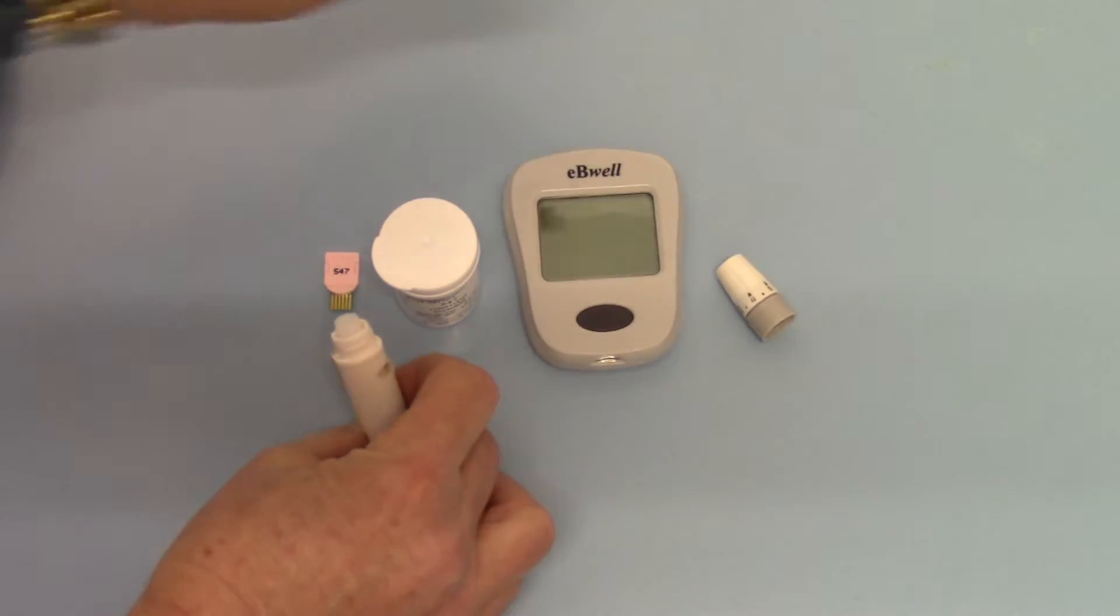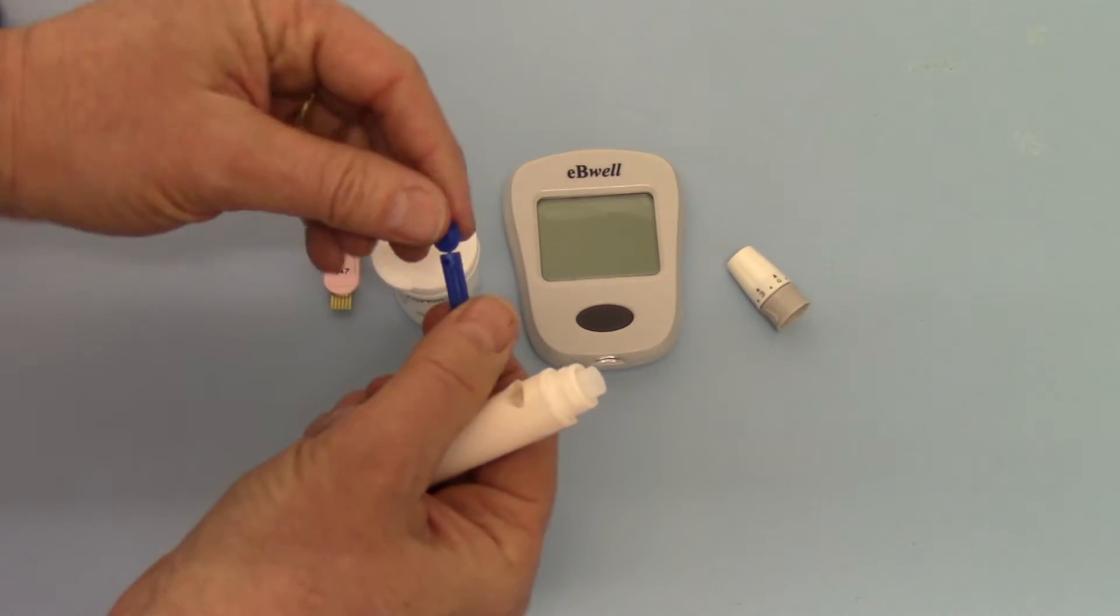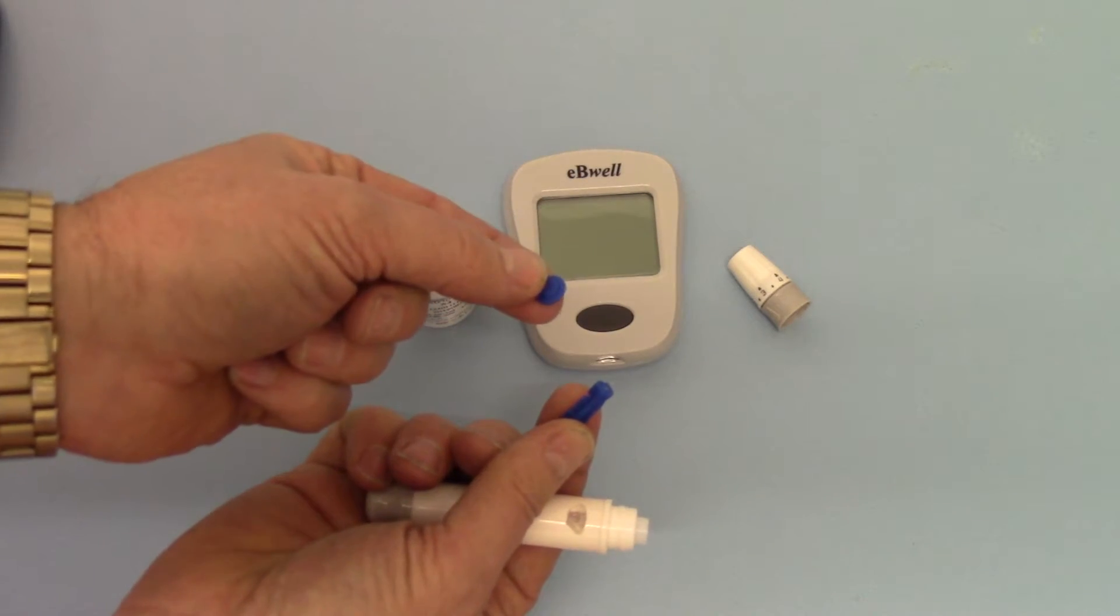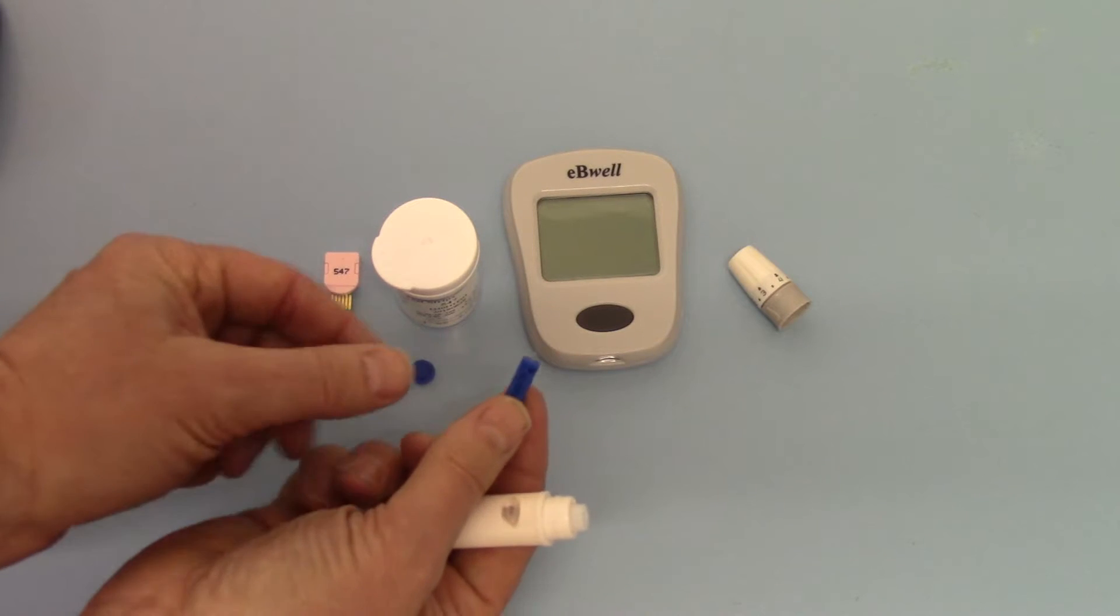So this is one of the lancets. To get it ready for testing you just twist it round and remove the plastic cover.